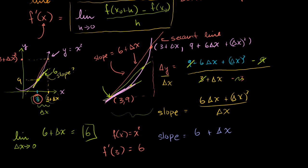In the last video, we found the slope at a particular point of the curve y equals x squared. But let's see if we can generalize this and come up with a formula that finds the slope at any point of the curve y equals x squared.